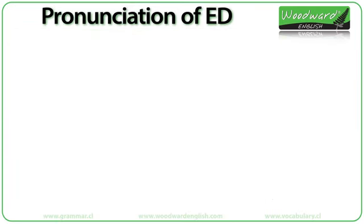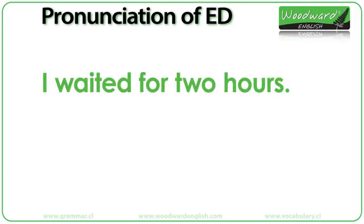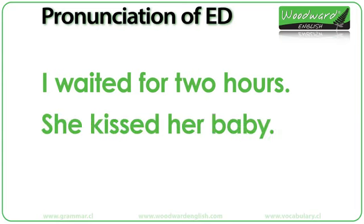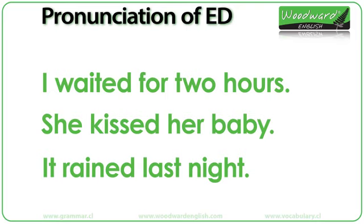Let's look at some example sentences — listen to the pronunciation of the words ending in ED. 'I waited for two hours.' 'She kissed her baby.' 'It rained last night.' Now, if you say 'rained' with a T ending instead of a D ending, people will understand you. But if you say 'rain-ed' with two syllables instead of one, people will normally not understand you. It seems insignificant, but it is the difference between people understanding you or not. Remember: the 'id' sound with the extra syllable is only after words ending in T or D.